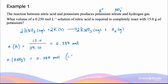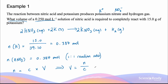This is a 1 to 1 reaction ratio. The question asks for the volume of 0.25 mol per liter nitric acid. We have the moles of nitric acid and know that moles equals concentration multiplied by volume. Rearranging, volume equals moles divided by concentration: 0.384 divided by 0.250. The moles cancel with moles per liter, leaving the volume in liters. The answer is 1.53 liters.